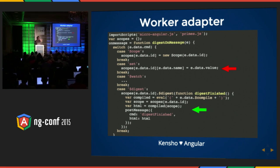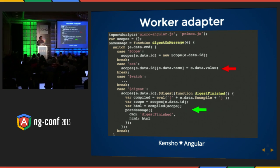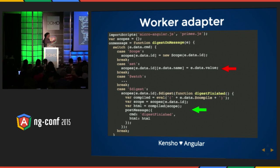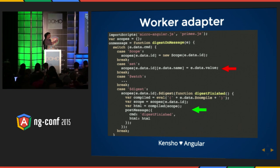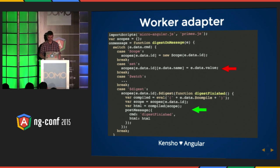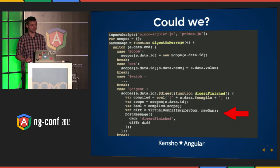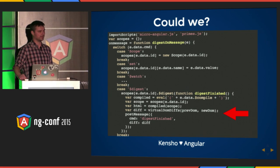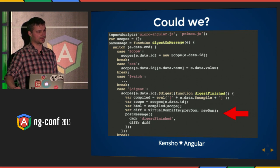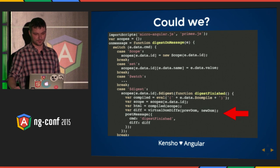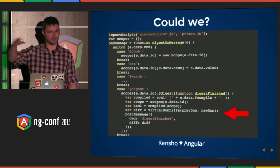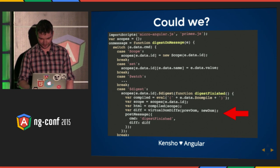The interesting thing is, because it has a model, it has to create HTML. And when the digest cycle runs — the green arrow — it has to send back HTML. And you're wondering: can I compute the diff of a virtual DOM and send it? Yes. But like Fermat, I'll just leave a proof to the reader.